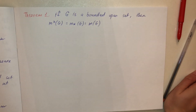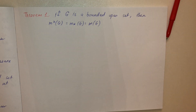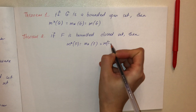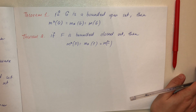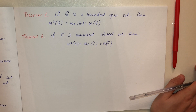Theorem 1: If G is a bounded open set, then the inner measure equals the outer measure, and both equal the measure of G. Theorem 2: If F is a bounded closed set, then the outer measure equals the inner measure, and both equal the measure of F. So if a set is either bounded open or bounded closed, the inner and outer measures equal the measure of the given set.